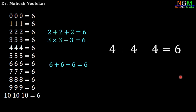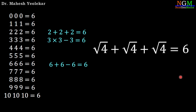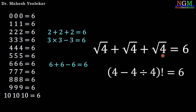Next equation: 4, 4, 4, 4 equals 6. Apply square root and addition: square root of 4 plus square root of 4 plus square root of 4, giving 2 plus 2 plus 2 equals 6. Or 4 minus 4 divided by 4, so 4 minus 1 equals 3, and 3 factorial equals 6.